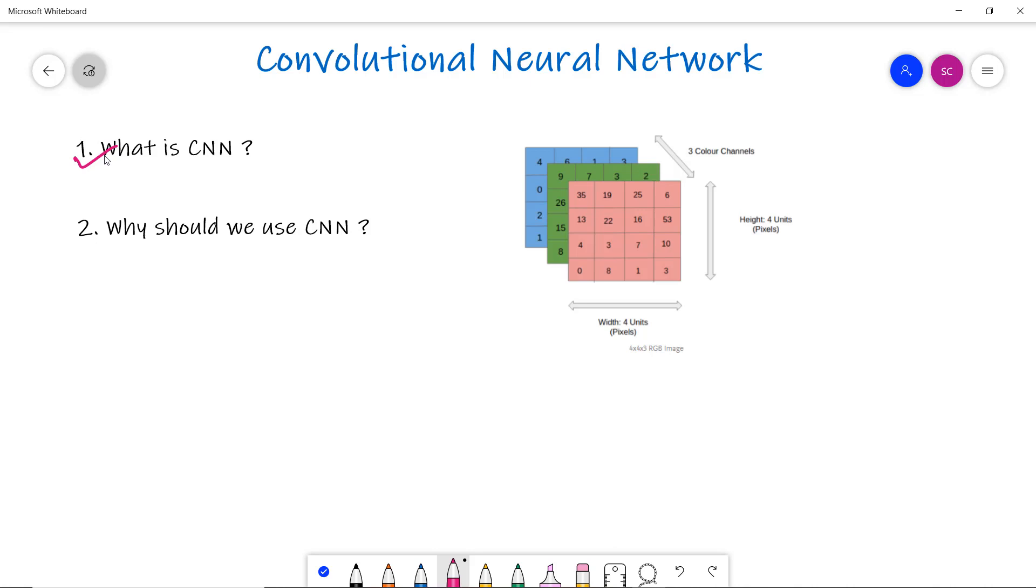As humans, we read an image by seeing it and applying our knowledge to understand what is in the image. But a computer is not a human being. So how does a computer read an image? As we know, an image is an array or matrix of squared pixels arranged in columns and rows.